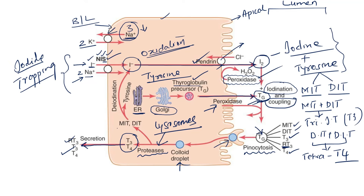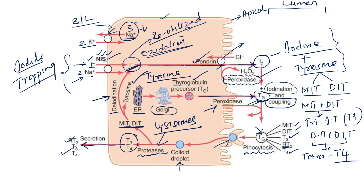The proteases also cleave out monoiodotyrosine and diiodotyrosine from the thyroglobulin. These MIT and DIT undergo a process called deiodination, facilitated by an enzyme called deiodinase. MIT and DIT are broken down into tyrosine and iodide. This released iodide can be reutilized for the synthesis of T3 and T4.